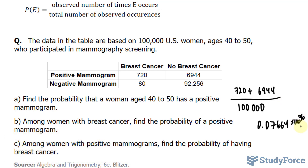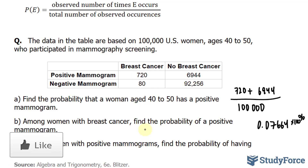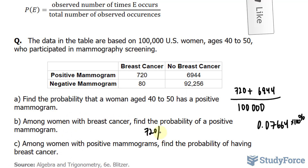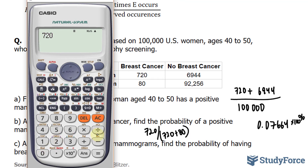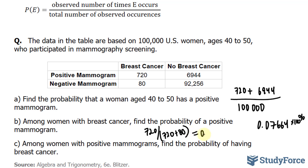In question B, we're asked: among women with breast cancer, find the probability of a positive mammogram. To do this, we look at only women that have breast cancer — that's 720 added to 80. We want the probability of just positive mammograms, so we take 720 divided by the sum of 720 plus 80. Using our calculator, 720 divided by (720 plus 80) gives us 9 out of every 10 women, or 90%. I'll write down 0.9.